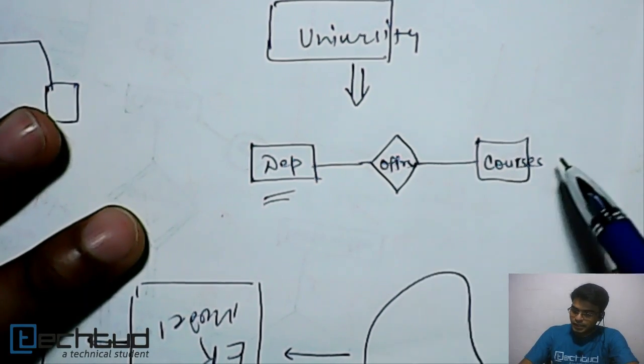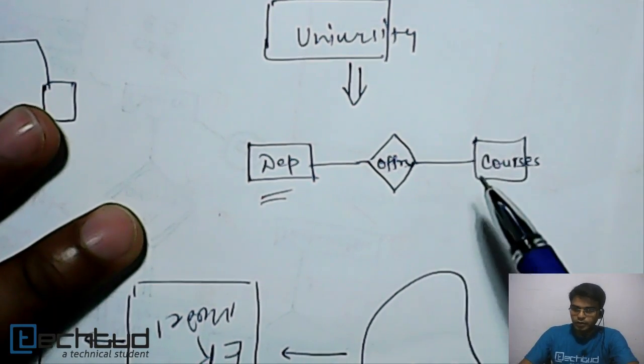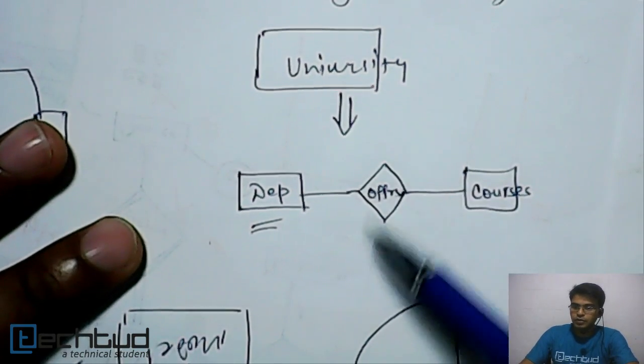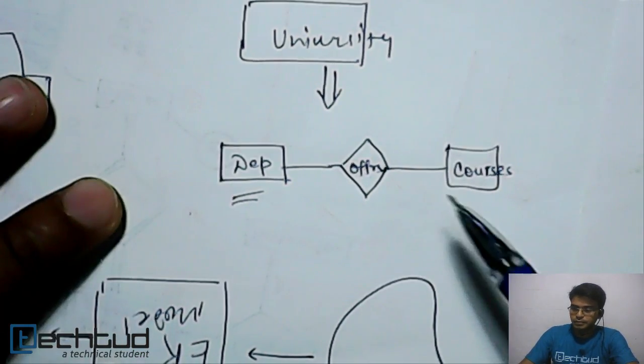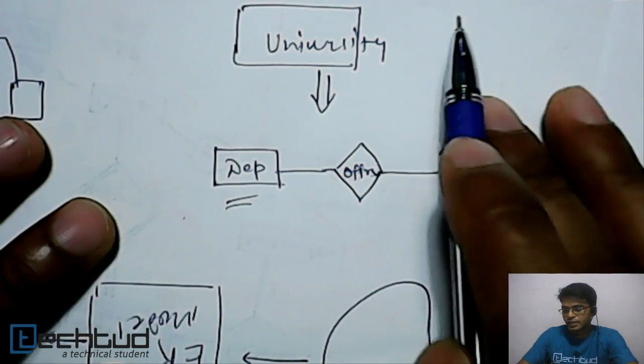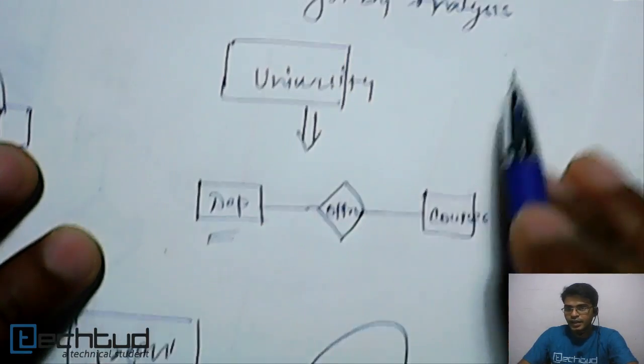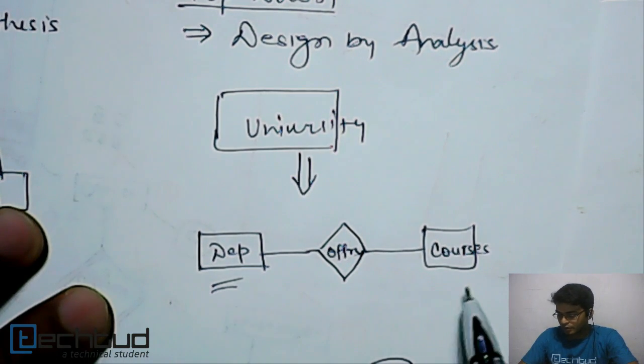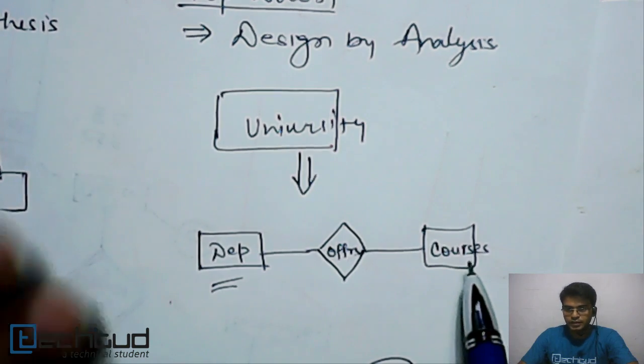So this is basically called top-down approach. From this top level entity we are going down and breaking it up until our criteria is satisfied. So this is called design by analysis. We are basically analyzing our requirement every time and we see whether it is satisfied or not.